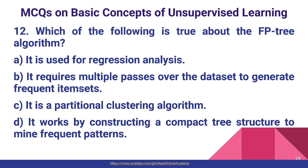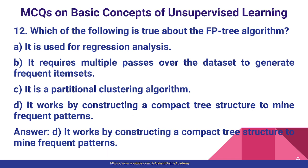Question number twelve: which of the following is true about the FP-growth algorithm? It works by constructing a compact tree structure to mine frequent patterns. In the FP-growth algorithm, it constructs a compact tree structure and tries to mine which patterns are frequent — which tree is frequently appearing — and based on that it generates the most frequent pattern. It is part of association rule mining, so option D is the correct answer.